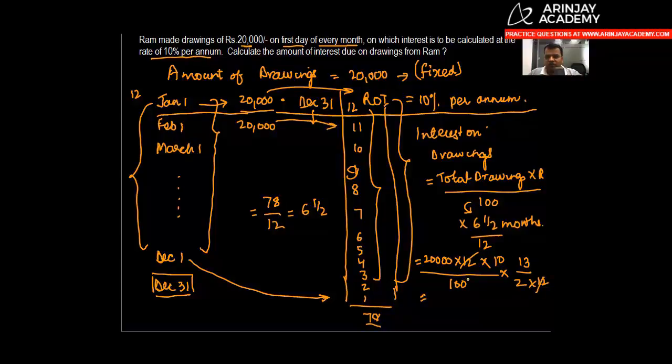This 12 will knock off this 12, and when you clear this, it will give you 1000. 1000 into 13 gives you 13,000. So the interest on drawings, the total amount of drawings that have been made, is going to be equal to 13,000.